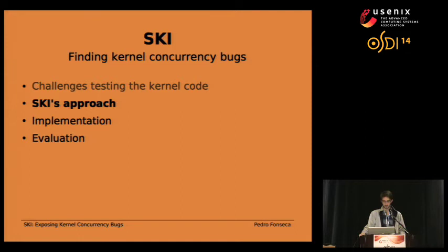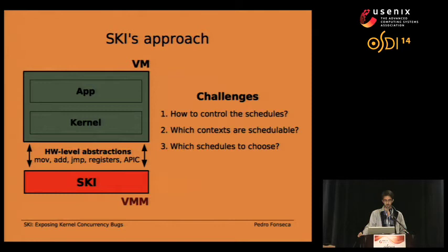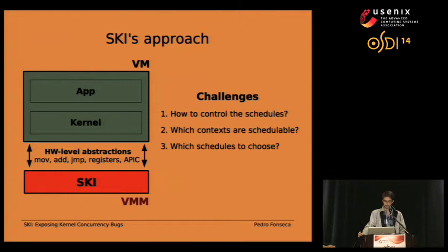Now I'll explain the approach we follow. We implemented Ski using a modified virtual machine monitor, where the only thing we see is a stream of assembly instructions being executed. There are three questions we need to answer: how do we control the schedules? How do we know which threads are ready to be executed — for example, whether a thread is waiting on an object held by a different thread? And given the huge interleaving space, how do we decide which interleaving to choose first?